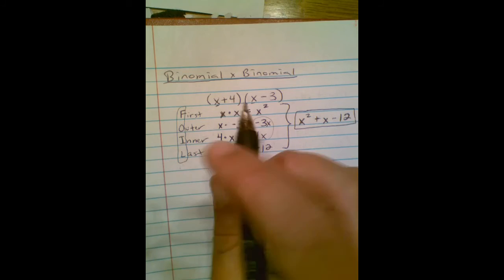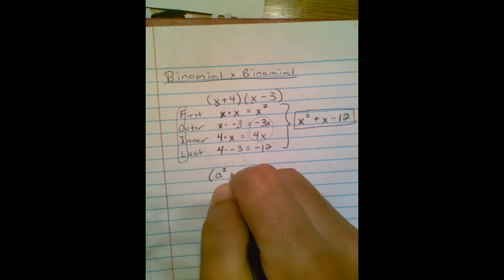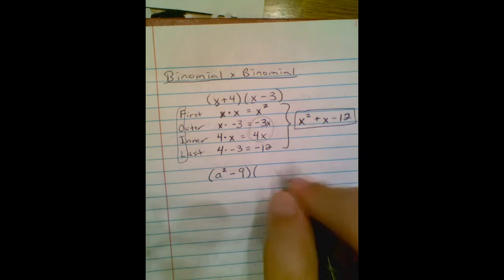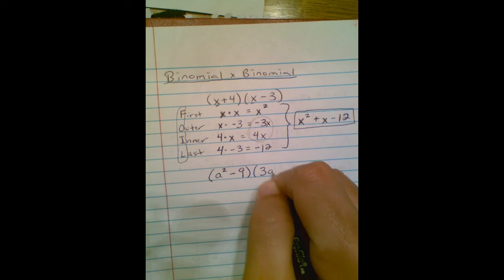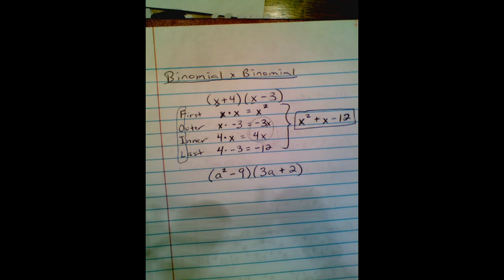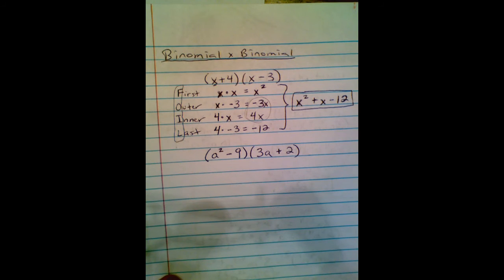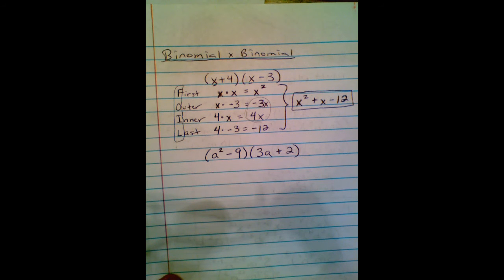We'll do this with different exponents as well. So I might have (a²-9) and maybe (3a+2). A squared minus 9 times 3a plus 2. I want to multiply that out so I'm going to write out FOIL every time like I did up here.